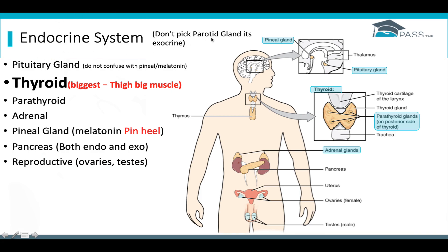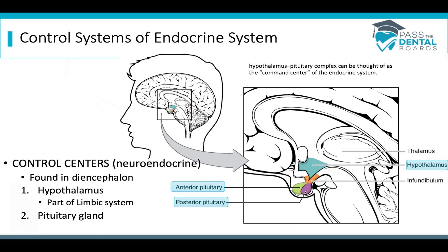Don't pick the parotid gland because that is an exocrine gland. The parotid gland is often used as a distractor, so if they're asking about endocrine glands, don't pick the parotid gland.